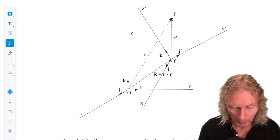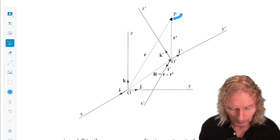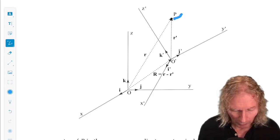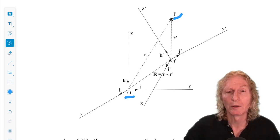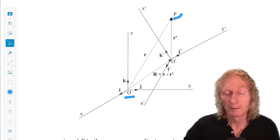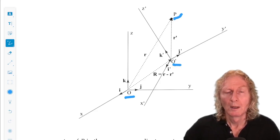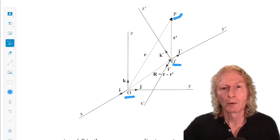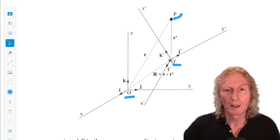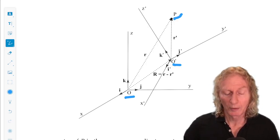So here's the point P moving around in space. And then we have observer O with his or her own coordinate system, I, J, K, defining the coordinate directions X, Y, Z, and observer O prime with his or her coordinate system, I prime, J prime, K prime, and coordinates X prime, Y prime, Z prime.